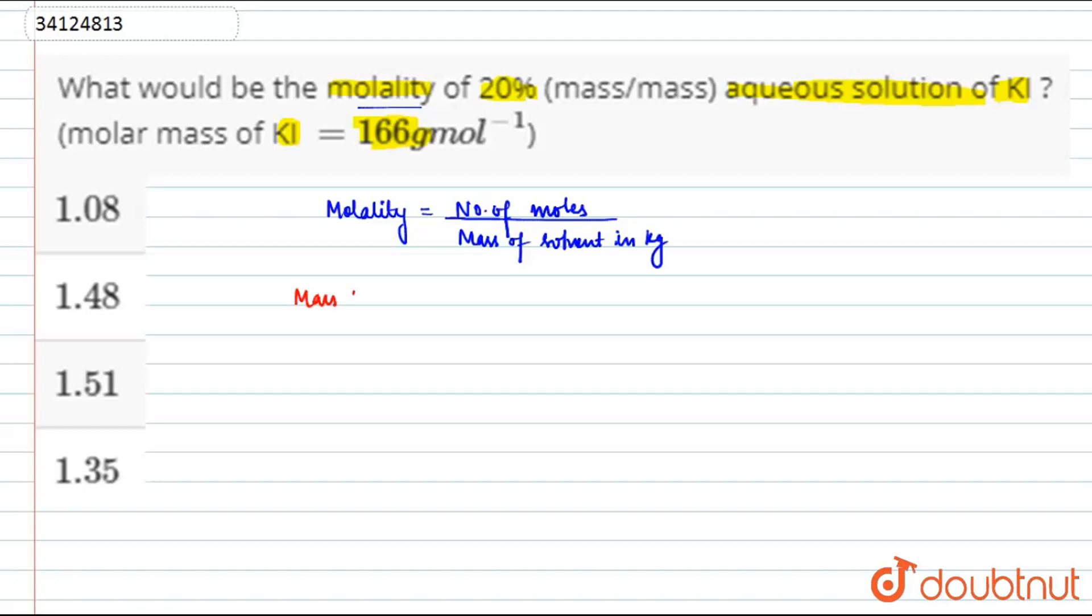Mass percentage is equal to 20%, which means mass of solute is equal to 20 grams. 20 grams per 100 grams of solution means mass of solvent is equal to 100 minus 20, that is 80 grams.